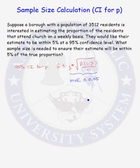They want the margin of error to be less than or equal to 0.05. So let's write the inequality that we want. We want Z star times the square root of P hat times 1 minus P hat over N to be less than or equal to 0.05.